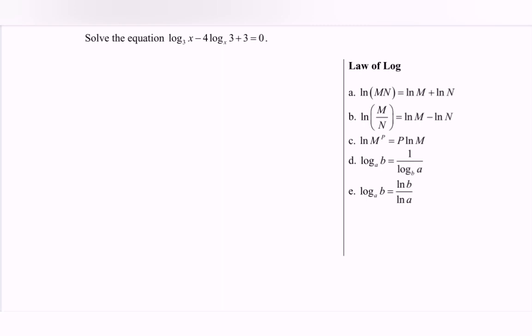What we have to do is based on the law of log on the right-hand side. Given the situation, we have log base 3x minus 4 multiplied with log base x of 3 plus 3. Notice that the base is not the same.